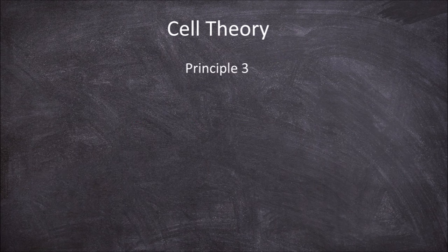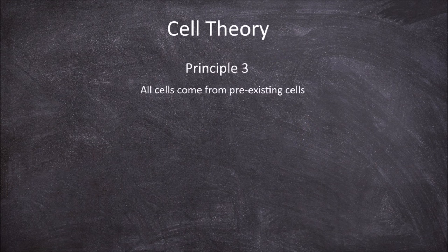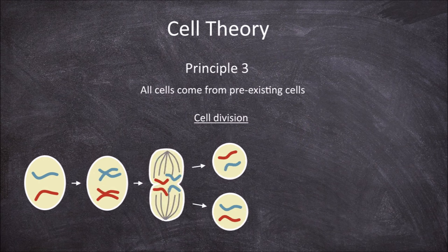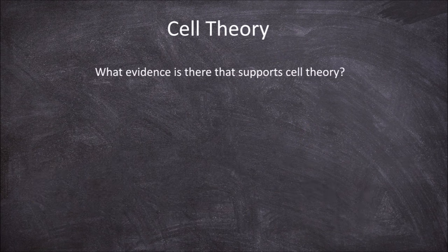The third principle of cell theory is that cells come from pre-existing cells. Cells are formed by cell division. A cell will divide to form two smaller cells, whether through binary fission in prokaryotes, or through mitosis or meiosis in eukaryotes. What evidence is there that supports cell theory?